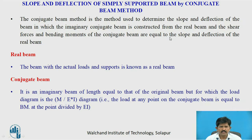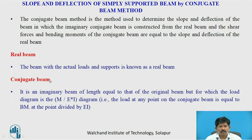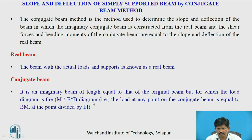A real beam is a beam having actual load and support condition. Whereas in case of conjugate beam, it is an imaginary beam of length equal to that of the original beam, but for which the loading diagram will be the M upon EI diagram.